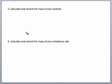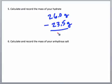Number five on your sheet says calculate and record the mass of your hydrate. So what we're going to do is take the mass of that empty crucible, which was 23.5 grams, and after we put the hydrate in it, it was 26.0 grams. So if we subtract those two values, we'll get a mass of 2.5 grams. That's the mass of the original hydrate that contains the water.